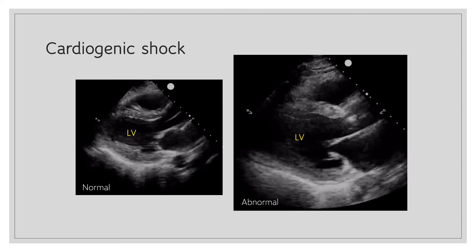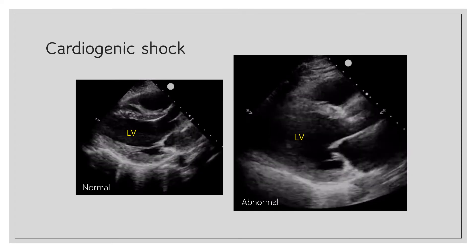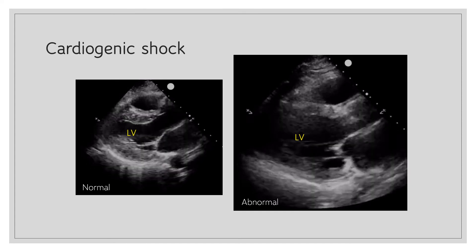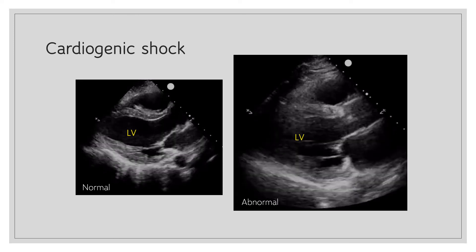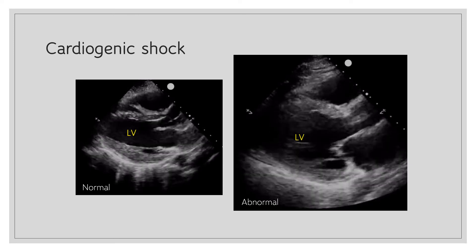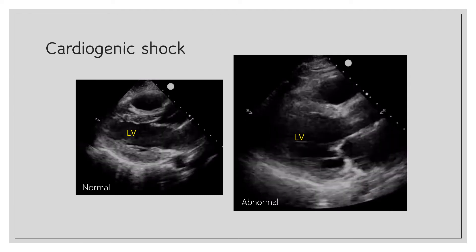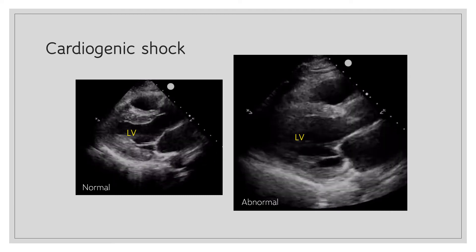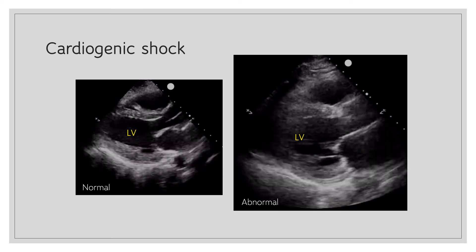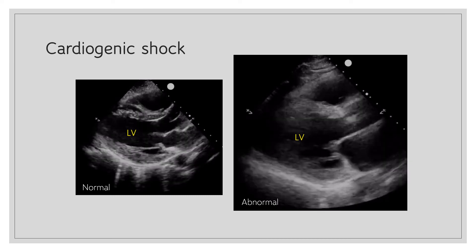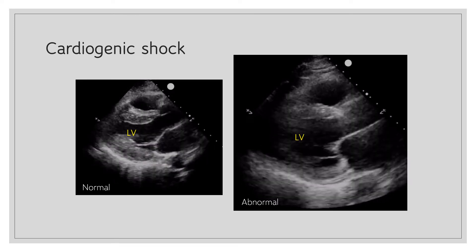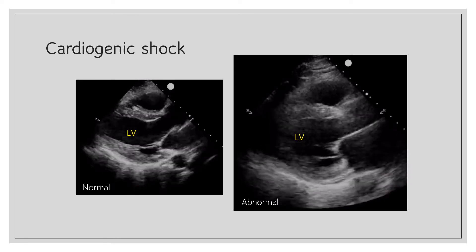Now let's take a look at the ultrasound findings in cardiogenic shock. On the left-hand side of the slide, you can see a normal heart with normal left ventricular systolic function, where the LV walls thicken and come close to each other by at least 30% during systole. In diastole, the mitral valve leaflets open completely, and the anterior mitral valve leaflet almost touches the interventricular septum — that's a normal finding.